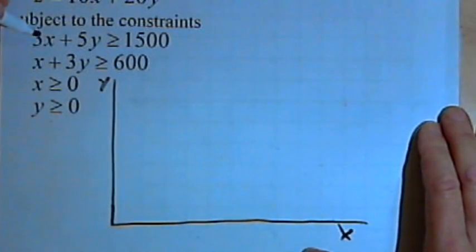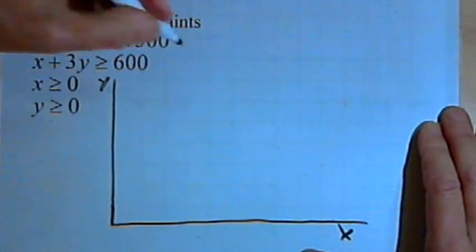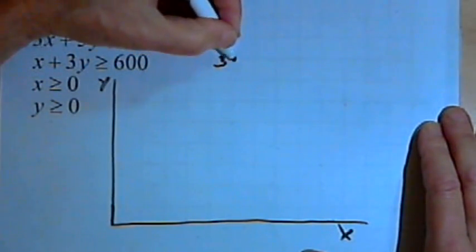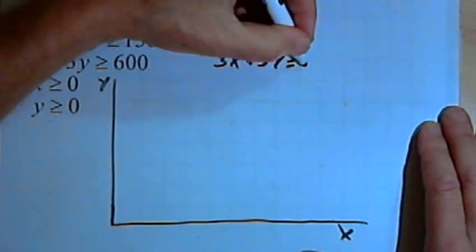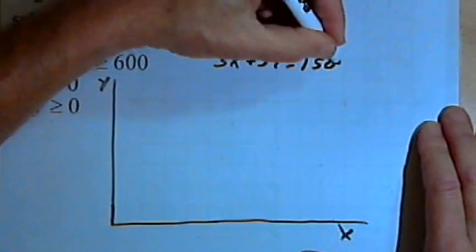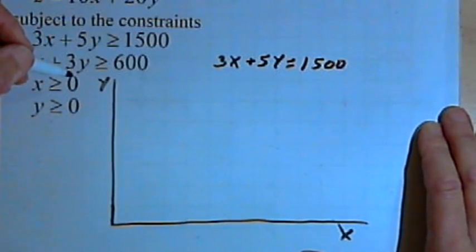We'll deal with the first inequality. 3x plus 5y is greater than or equal to 1500. I'm going to turn that into an equation, 3x plus 5y equals 1500, and find the x and y intercepts for that equation.